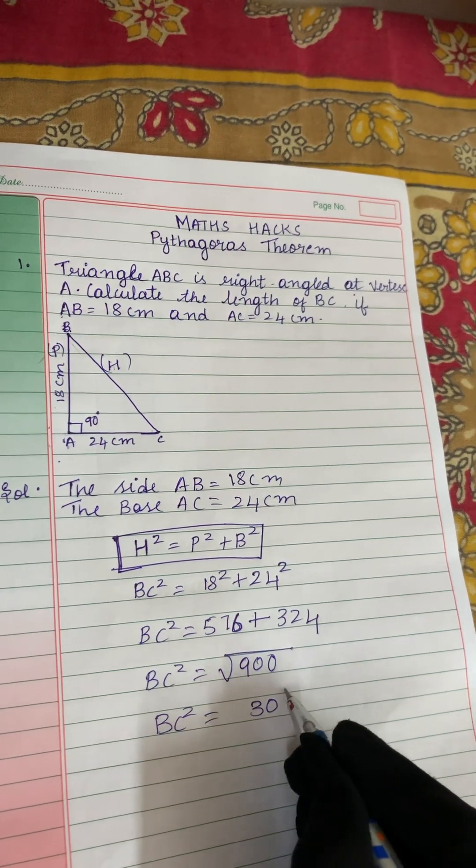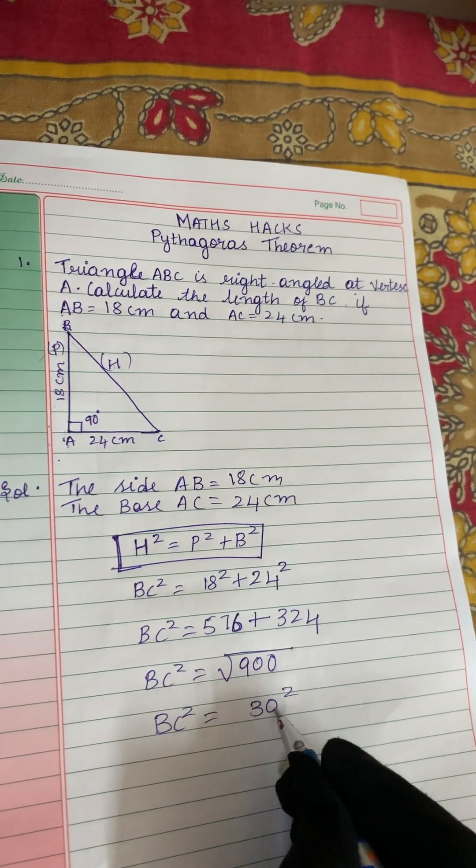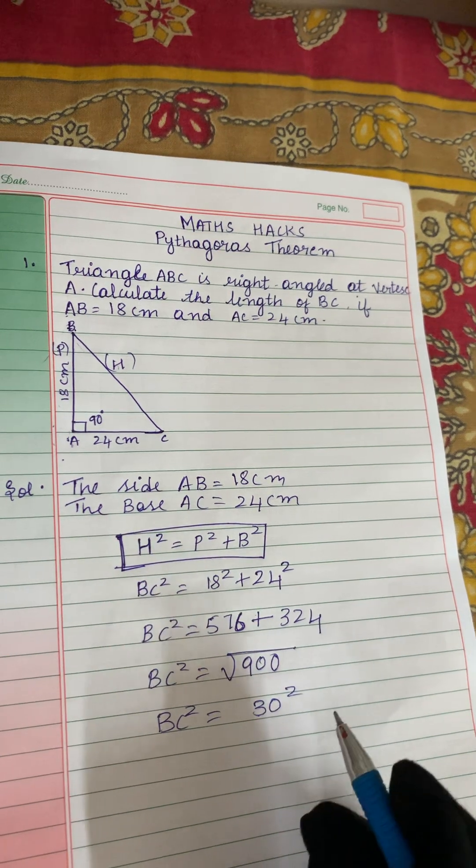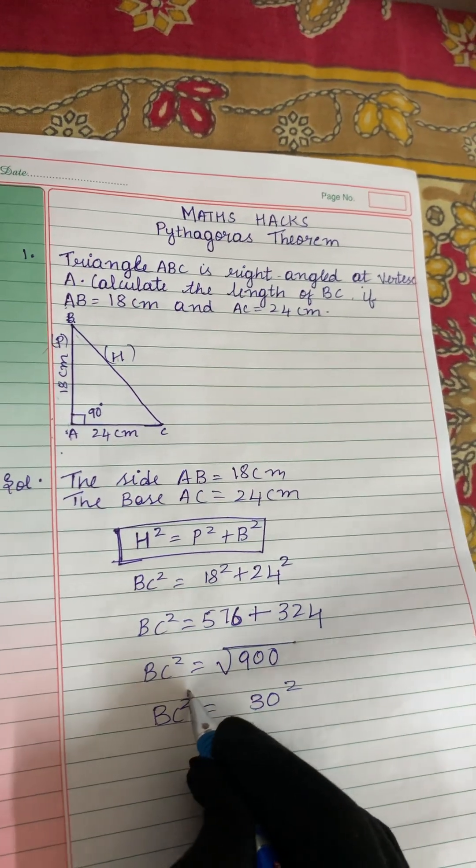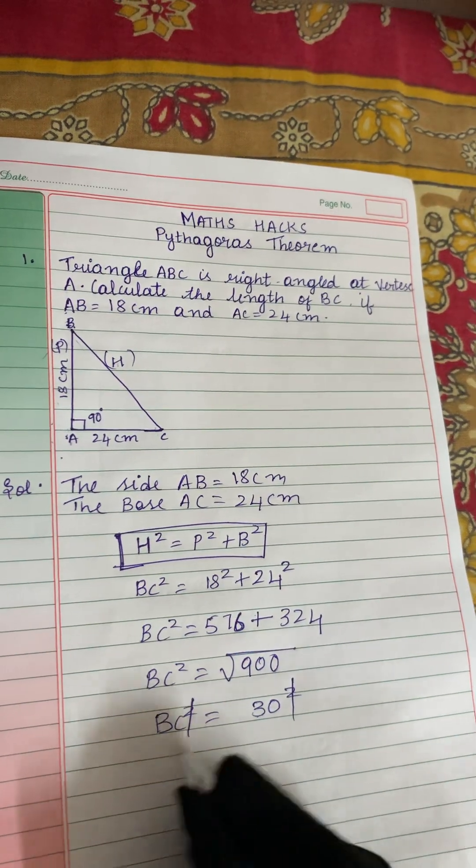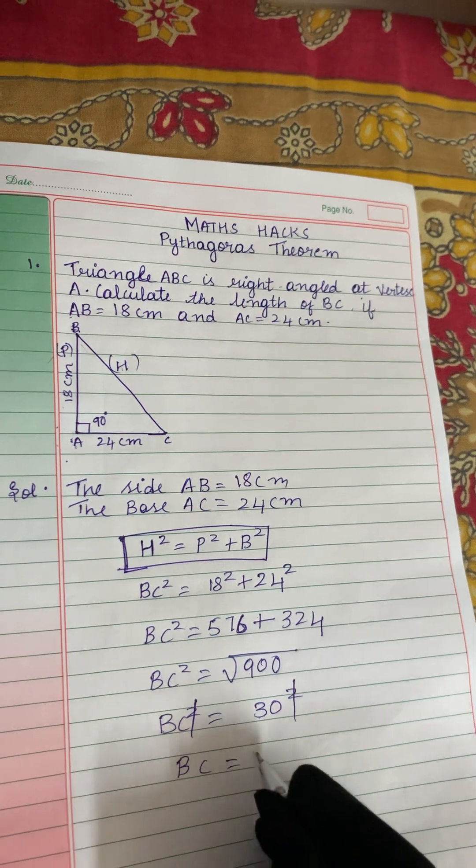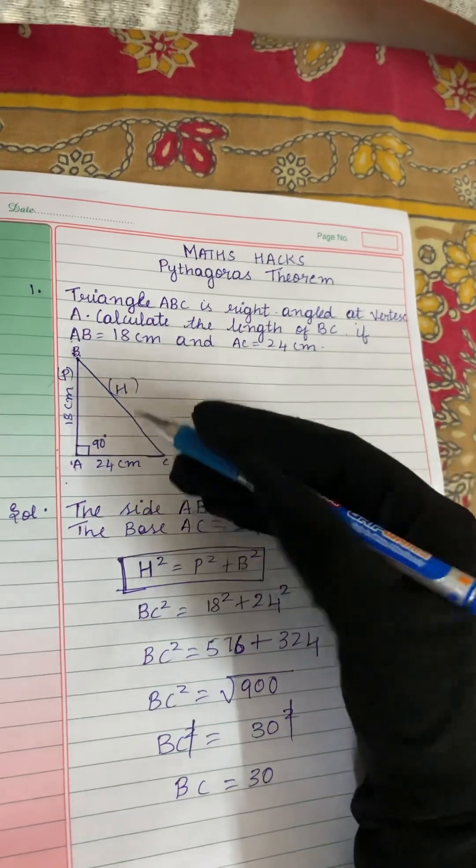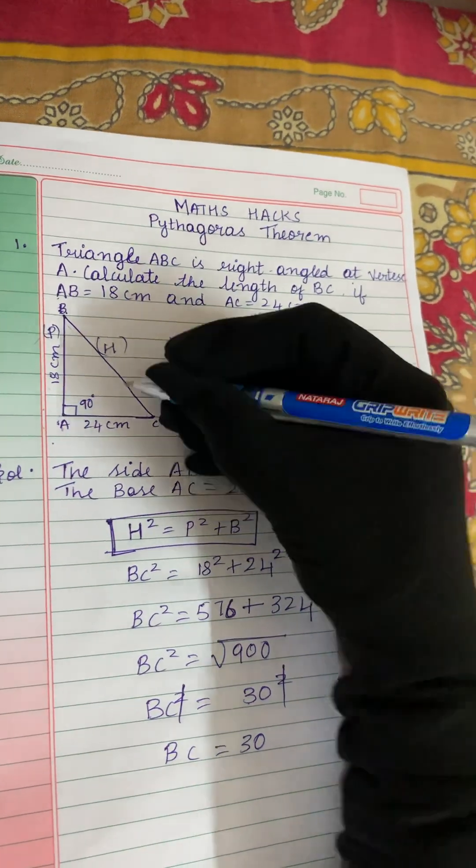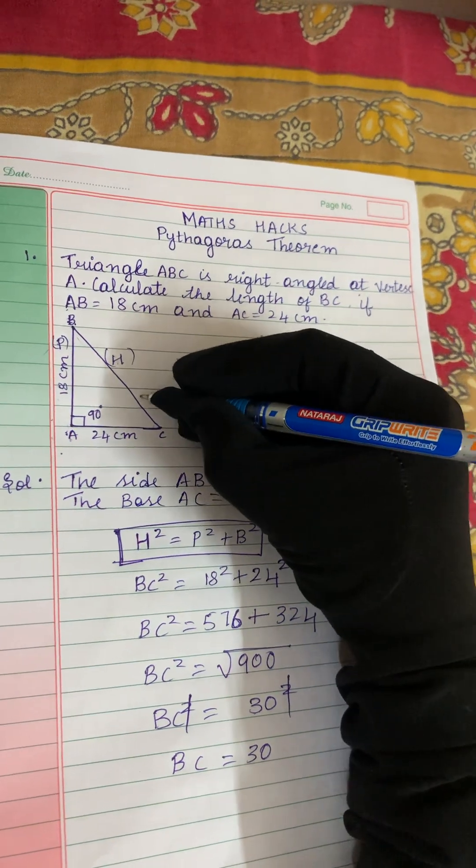If we multiply 30 twice, we will get 900 as our answer. Now let us cancel this square and this square. What is left? BC equals 30. So we found out the value of BC. The value of BC is 30 cm.